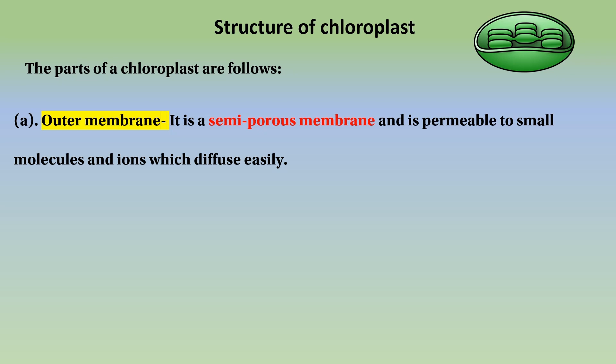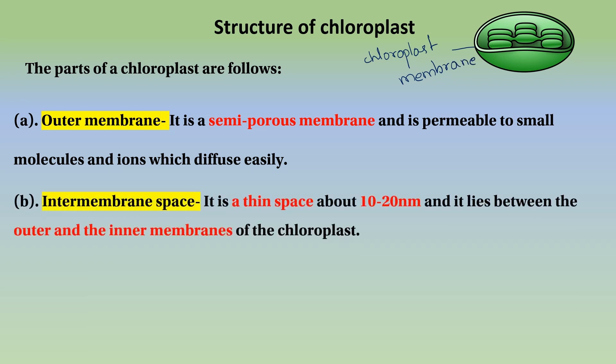Then we can look at the membrane of chloroplasts. The inner membrane controls ion and molecule passage. Then we can examine the intermembrane space. In the intermembrane space, it is about 10 to 20 nanometers, lying between the outer and inner membrane of the chloroplasts.